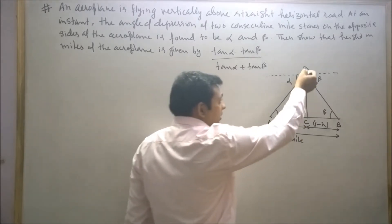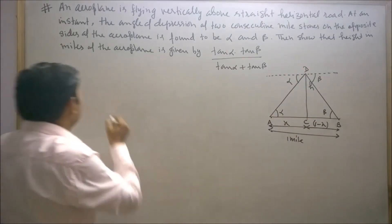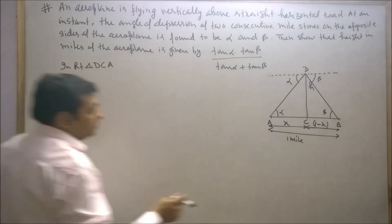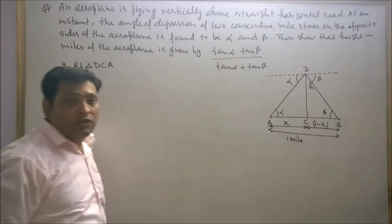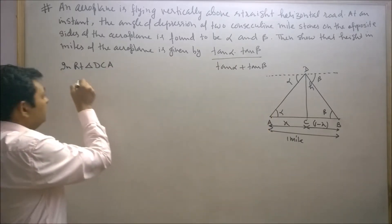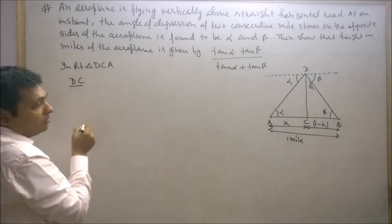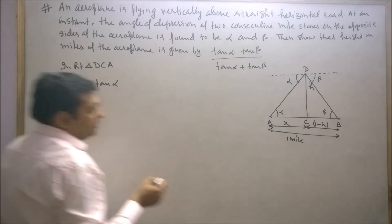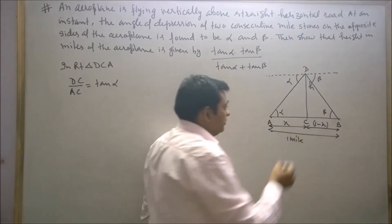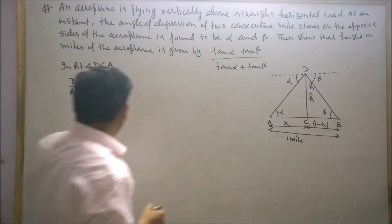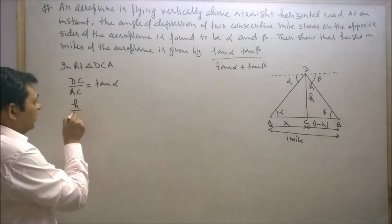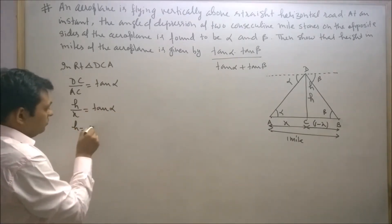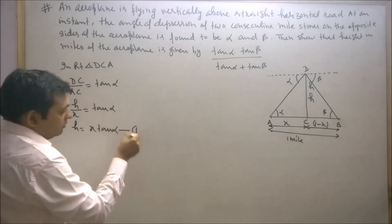Now consider right triangle DCA. In right triangle DCA, DC upon AC is equal to tan alpha. Let's say the height of the aeroplane is H. Therefore, H upon X is equal to tan alpha, or H is equal to X times tan alpha. This is our first equation.